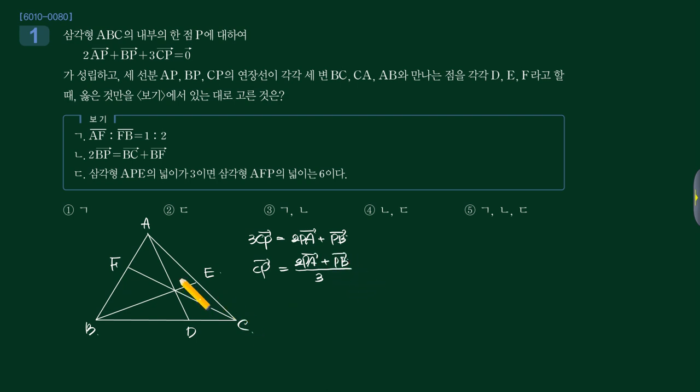그래서 여기 P점에서 CP 벡터는 이런 어떤 내분벡터, 여기 연결하게 되는 PF, 얘가 내분벡터니까 P점에서부터 여기 내분벡터니까 얘가 PF 되는 거 맞죠.